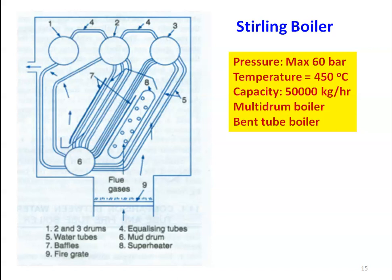This is the Stirling boiler, also called a multi-drum boiler. It has a capacity of 50,000 kg per hour. The specifications are: maximum pressure 60 bar and temperature 450 degrees Celsius.